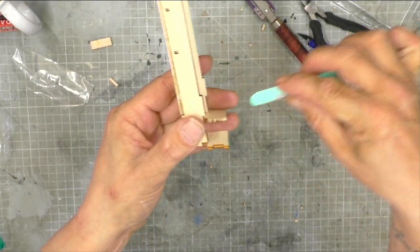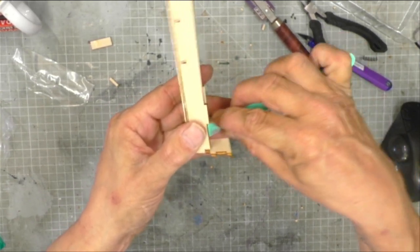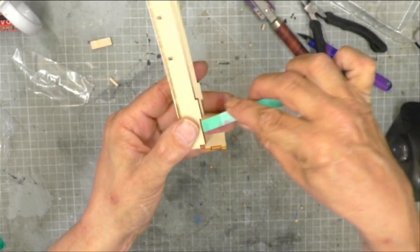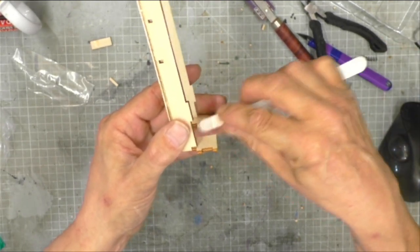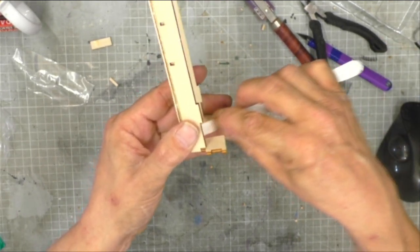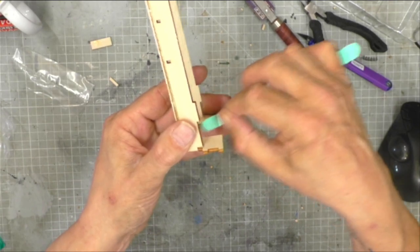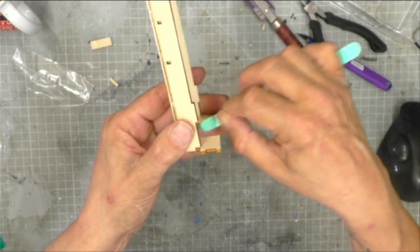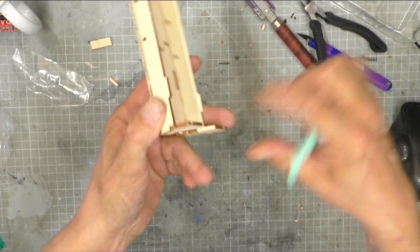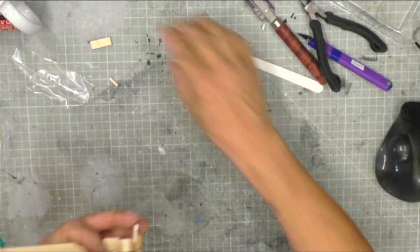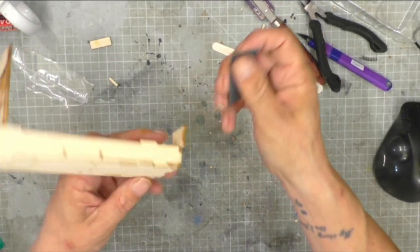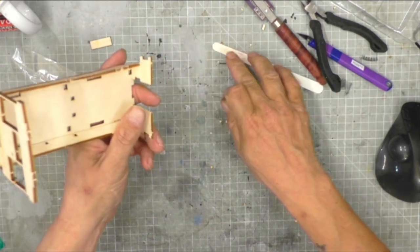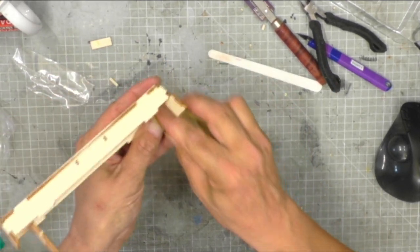It almost seems not worthwhile really, doesn't it? Because we've been here what, five, ten minutes? But isn't it nice to have a nice easy one sometimes? Now these emery boards are very, very good, but they are quite coarse. This is how I've managed to do this so quickly. So I'm going to get some finer sandpaper - I can't remember what grade this is, but I know it's finer. I'll just give that a quick rub over.